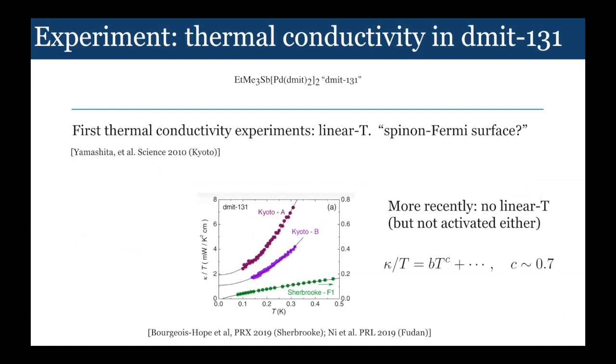The DMIT compound's a little bit different. In the early experiments on thermal conductivity by the Kyoto group, they actually saw linear T thermal conductivity. This is extremely exciting because it would seem to indicate that there's a Fermi surface of spin excitations in the system, which would correspond to the famous spinon Fermi surface possibility.